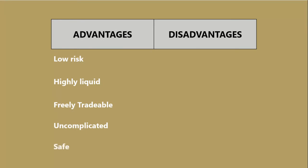Cash is safe — if the banks or building societies fail, you're protected by the compensation scheme. Currently, if the bank or building society you hold your money in fails, you would get back £85,000 per person, per provider. It's probably safe to say that no government would allow a major UK bank to fail anyway. On the disadvantages side, cash generates relatively low returns — a lot of our new business comes from people who are disappointed with the rate of return they're receiving from deposit accounts.